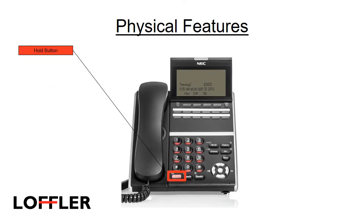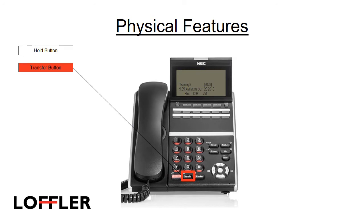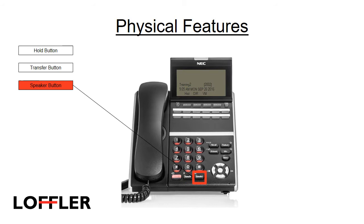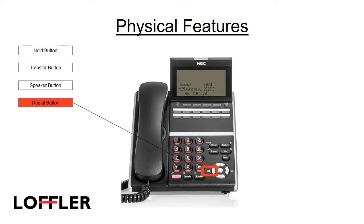The hold button will let you put internal and external calls on hold. The transfer button allows you to transfer a call to another coworker or an outside line. Press the speaker button for hands-free capability; the button lights up when enabled. The mic light must be lit for two-way conversation. To redial the last person you called, press the redial button on the navigation key, scroll back through the numbers dialed, and when the desired number is displayed, press the pound key to activate dialing.